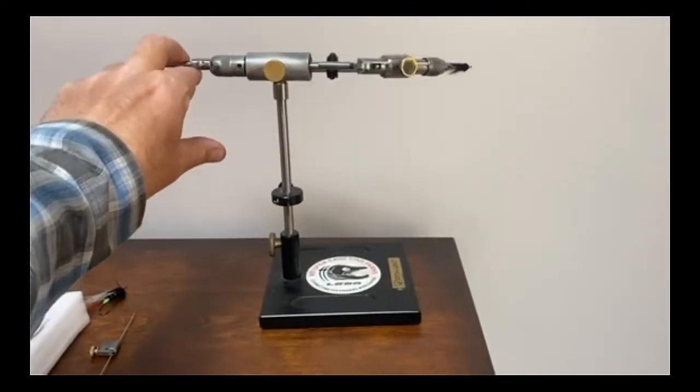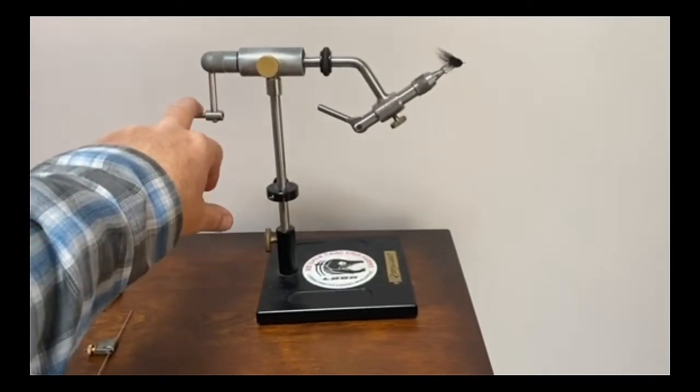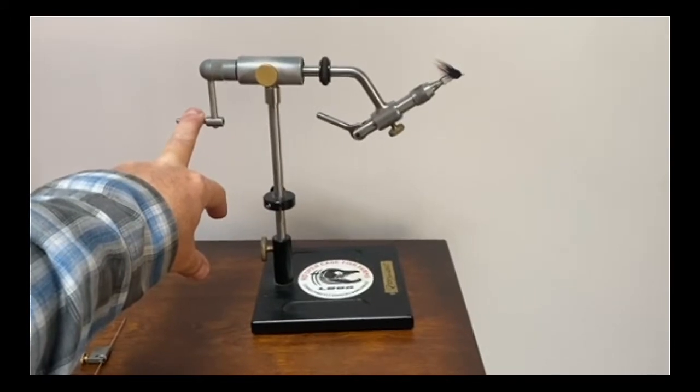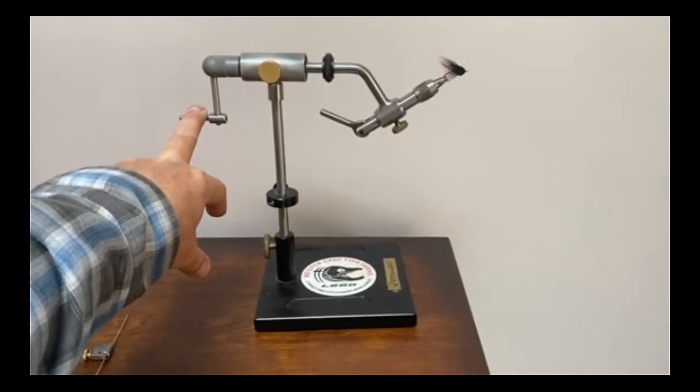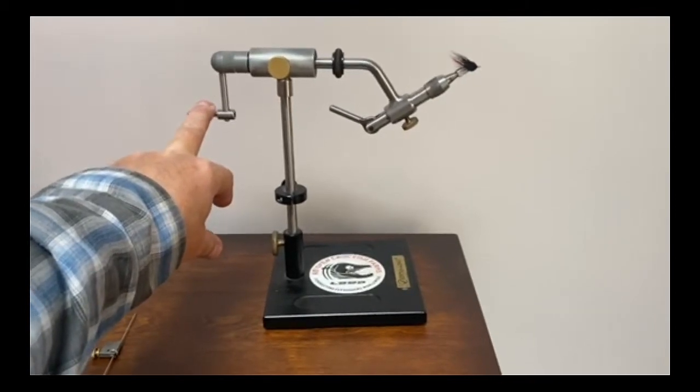So I use this Dyna King Barracuda. Basically, I've probably had this vice nearly 12 years now I guess. I've tied hundreds of thousands of flies on it in that time.